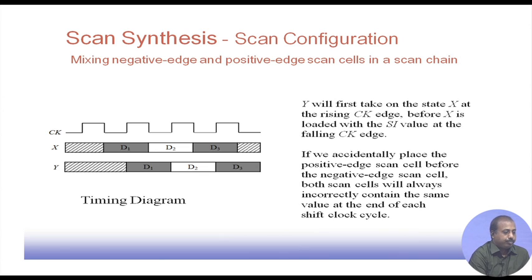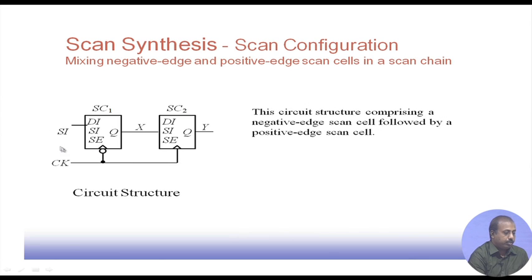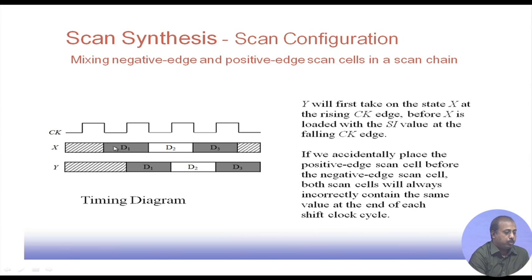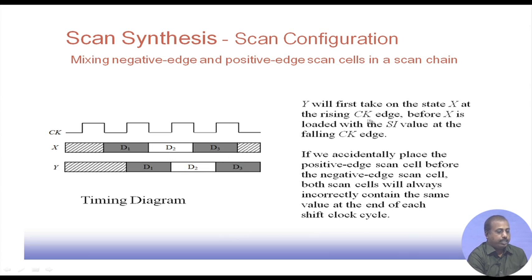The scan clock is running; we have the x input, the SI, and x, then y. When the clock goes low at the negative edge, the value is put onto the x line. When the clock goes high, the D1 value comes to this one. Similarly, x gets the value D2 when the clock goes low at that point, and when the clock goes high, the next flip-flop gets the value of D2. Y will take on the first x at the rising clock edge before x is loaded with the SI value at the following clock edge.